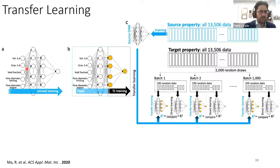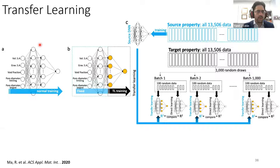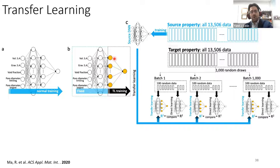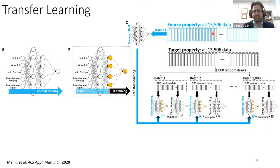In transfer learning, we do normal training on a source task using descriptors important to the adsorption process — things like surface area, void fractions, pore sizes, limiting diameters, largest diameters. We train on the source task (something easy to produce — a cheap experiment or simulation), then take what we've learned and use it in a new context. We fix all the layer weights determined in the source task and only allow the last layer to change, dramatically reducing the data burden for developing these types of models.